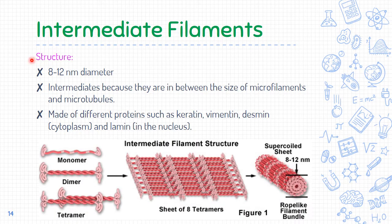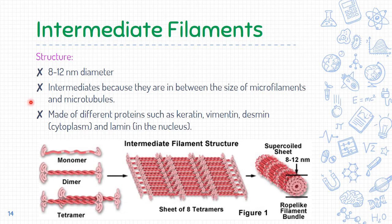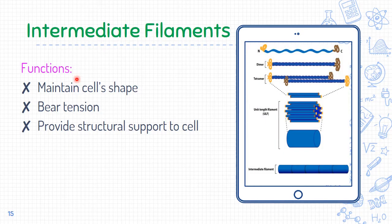The second main component is intermediate filaments. Their size ranges from 8 to 12 nanometers in diameter. They are called 'intermediate' because their size falls between that of the thinnest microfilaments and the largest microtubules. Intermediate filaments are made up from different proteins such as keratin and vimentin in the cytoplasm, and lamin in the nucleus. Their functions include maintaining cell shape, bearing tension, and providing structural support for the cells.